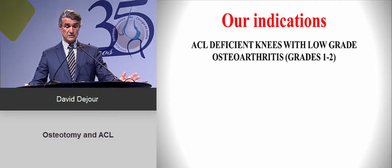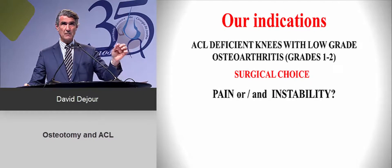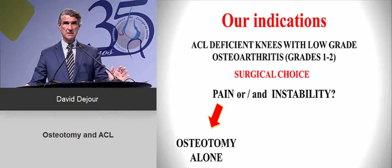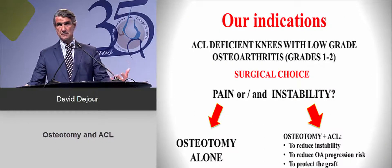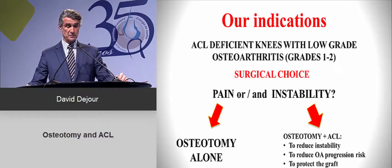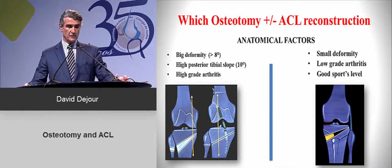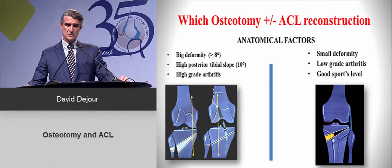The most important question for the indication is: does the patient have more pain or instability, or both? If only pain, do only an osteotomy — do not do an ACL. If both instability and pain, you can do an osteotomy plus an ACL to reduce instability and protect the graft. In terms of which osteotomy to use: if you have a large deformity or big slope, the closing wedge is probably better; if you have a small deformity with no risk of increasing slope, the opening wedge is probably best for return to sports.